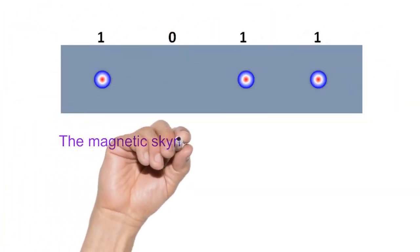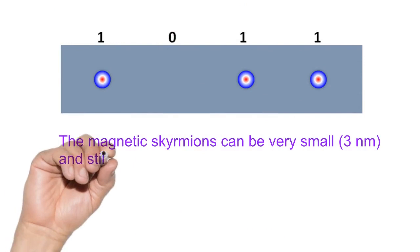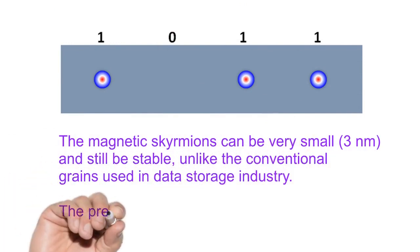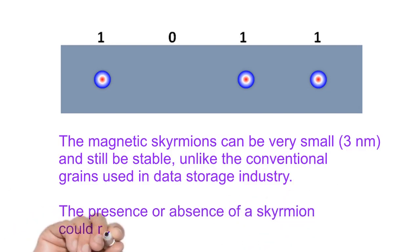The magnetic skyrmions can be very small, 3 nanometers, and still be stable unlike the conventional grains used in data storage industry. The presence or absence of a skyrmion could represent one or zero.